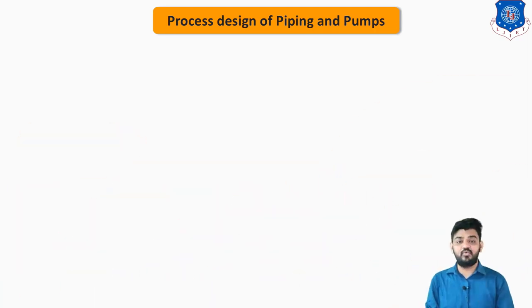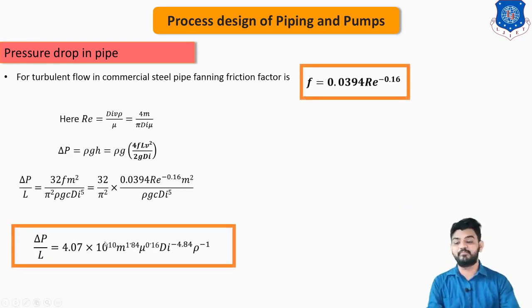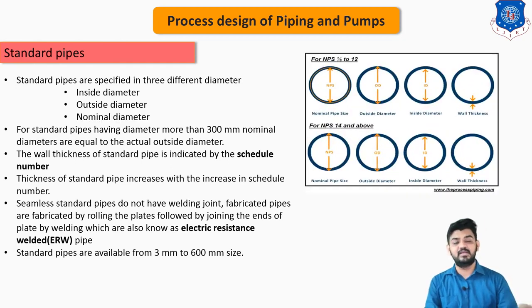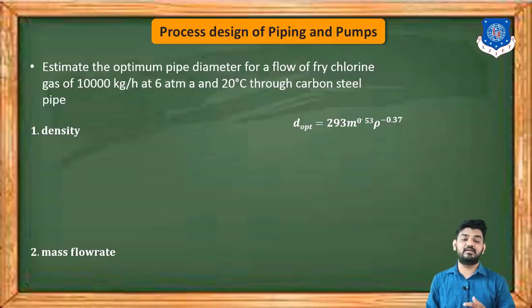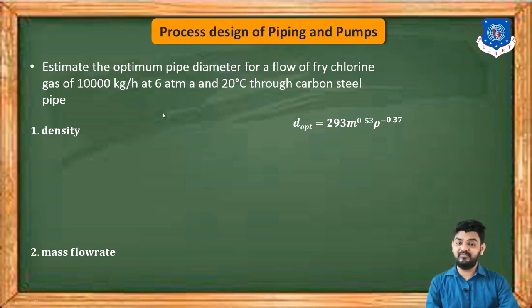In the previous video, we understood how to calculate pressure drop from a given system. We developed an equation for calculating pressure drop through the piping system, and we also saw what we mean by schedule number, outer diameter of pipe, and inner diameter of pipe. We also calculated how to estimate the optimum diameter for a given piping system using a particular equation, and we solved a related problem. If you missed that video, you can find it via the i-button here.